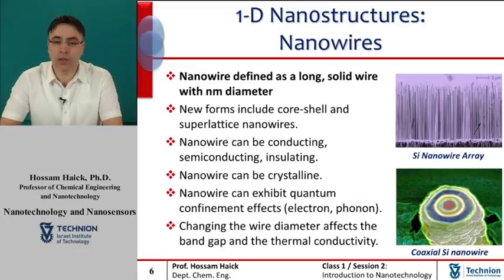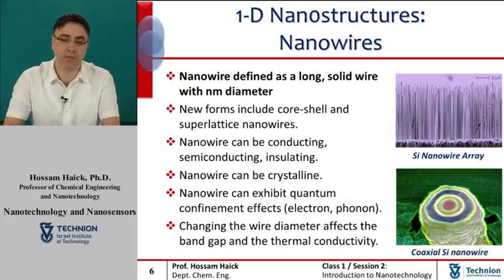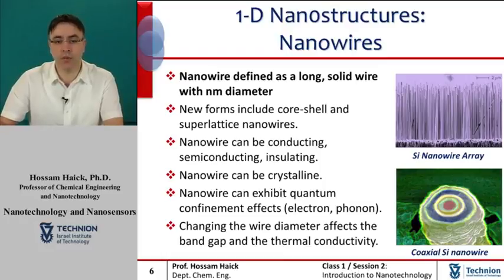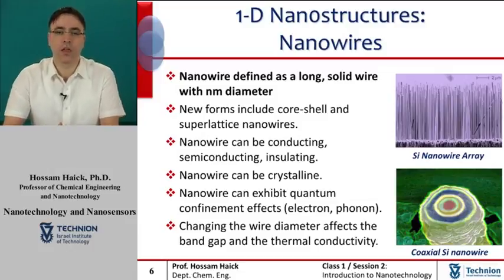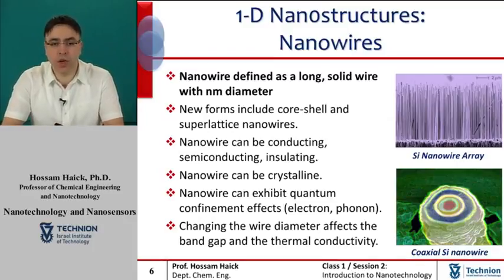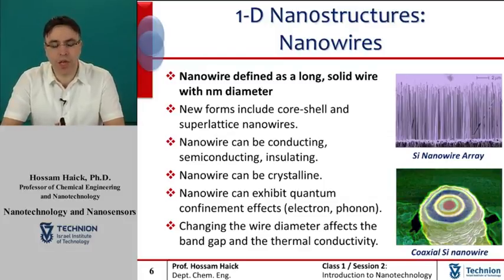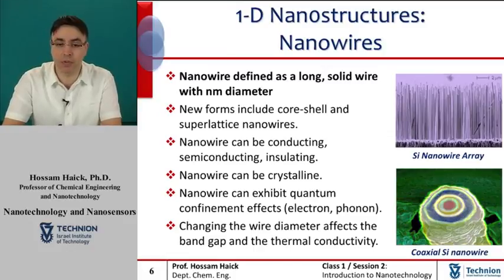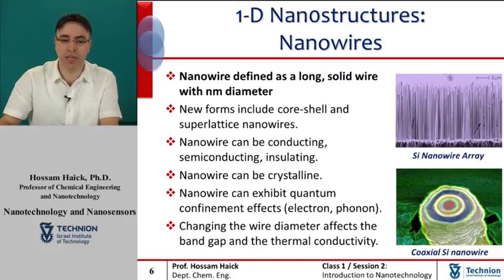On the other hand, molecular nanowires are composed of repeating molecular units, either organic — for example, DNA — or inorganic material. New forms of nanowires include core-shell superlattice nanowires, as seen in the bottom figure on the slide. Nanowires have two quantum-confined directions, while still leaving one unconfined direction for electrical conduction. Because of their unique density of electron states, nanowires in the limit of small diameters are expected to exhibit significantly different optical, electrical, and magnetic properties from their bulk three-dimensional crystalline counterparts.